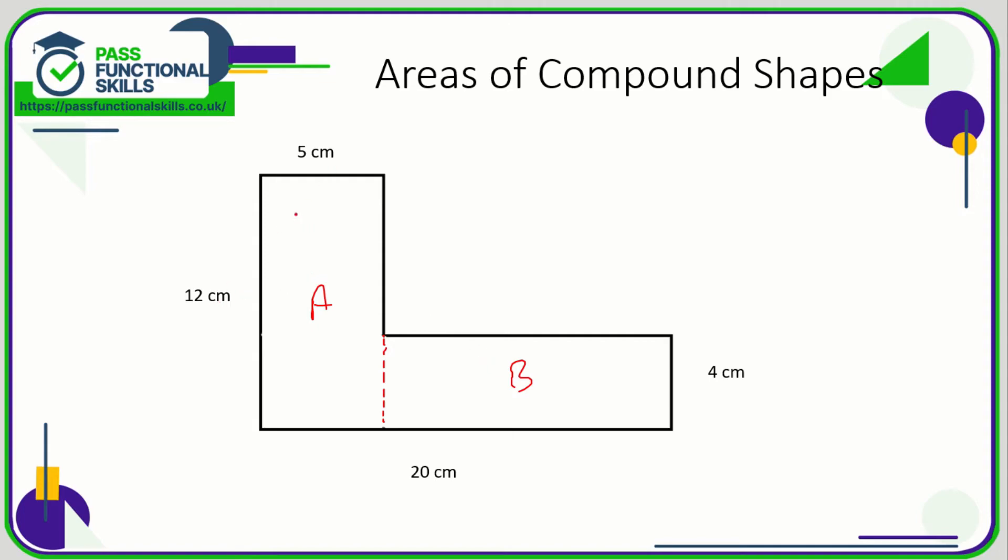So this rectangle is 12 times 5, which is 60 square centimeters. But this rectangle is not 20 by 4. It's 4 height, but 20 is all the way up to here, but we want this distance here. So if the shape is 20 wide but this part here is 5 wide, then this is going to be 20 take away 5, which is 15.